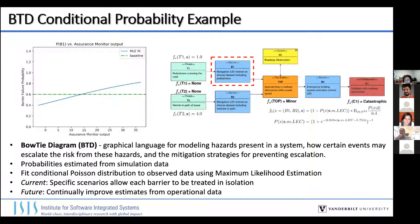This shows an example bowtie model for an autonomous car. We have a couple of threats — pedestrians crossing the road or a vehicle in our path of travel. We have barriers that can prevent that threat from becoming a top event. The top event is approaching a roadway obstruction at unsafe speed. Then we have a final line of defense — an emergency braking system that overrides if it detects an imminent collision. If that also fails, we might have a consequence. You can see how the bowtie captures hazard propagation and how benign events can escalate.